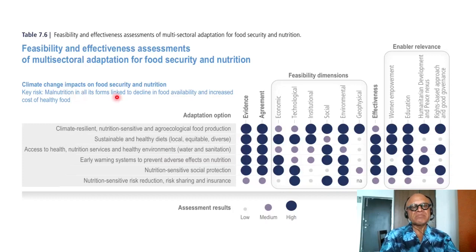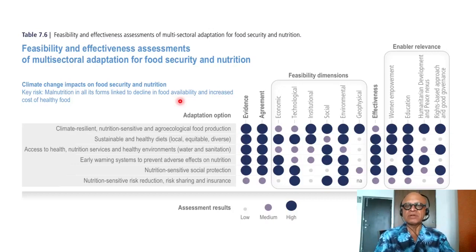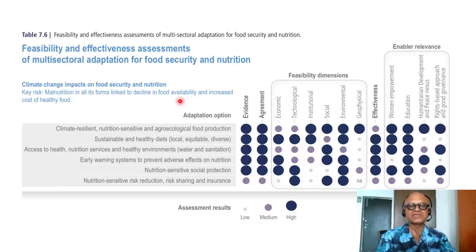Climate change impacts on food security and nutrition: the key risks are malnutrition in all its forms, linked to decline in food availability and increased cost of healthy food. You may have calories available but they may not be healthy, which leads to obesity, diabetes, and other risks including mental health illness and stunted growth.